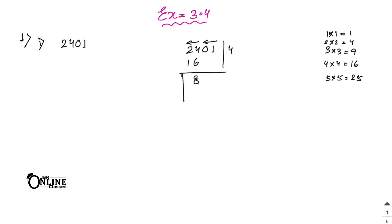Next, write down double of the quotient digit. We have 4, so double of 4 is 8. Write 8 as the new divisor base. Then you need to find a digit for the ones place that satisfies the division exactly.